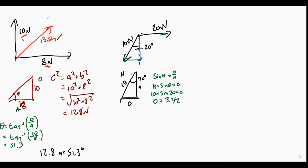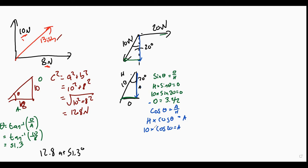Now let's do the blue one. Is that opposite, adjacent, or hypotenuse? Adjacent. So we're going to use cosine. You could use tan since we've got the opposite side now, but avoid it - if you made a mistake you don't want to propagate it. 10 times cosine 20 equals 9.4 - I expect this to be large because this line is bigger.